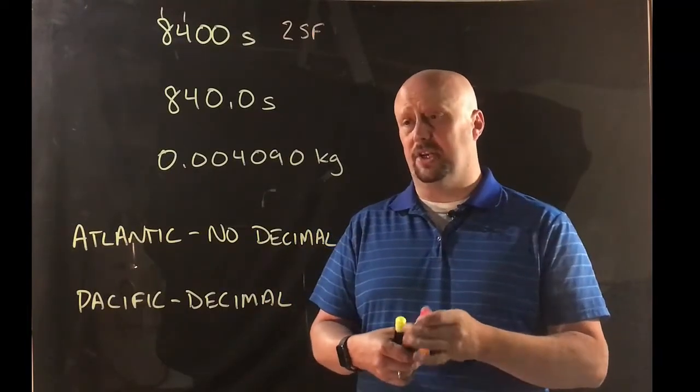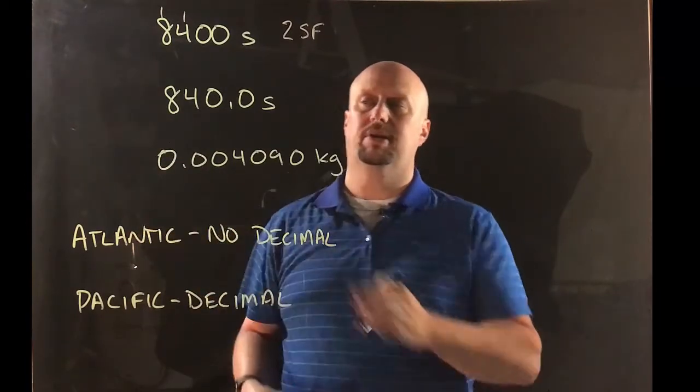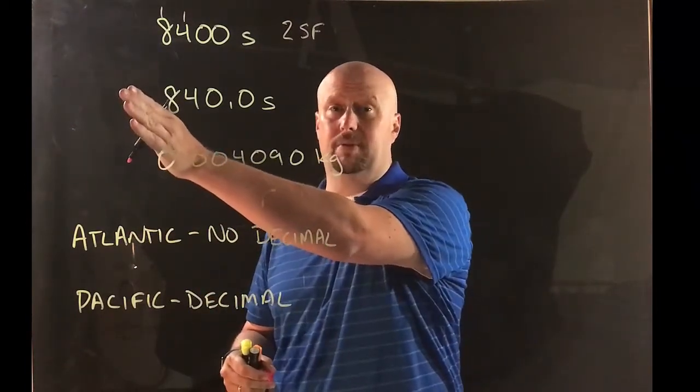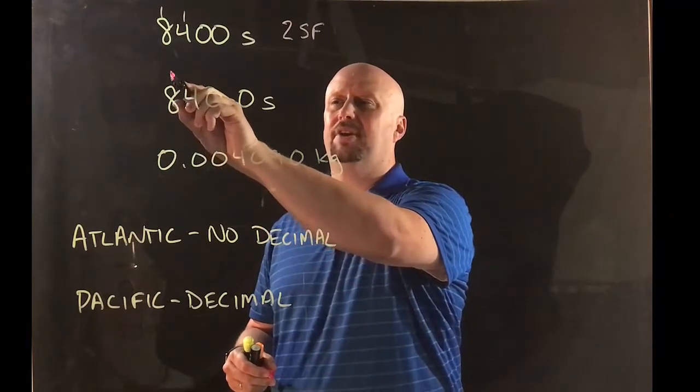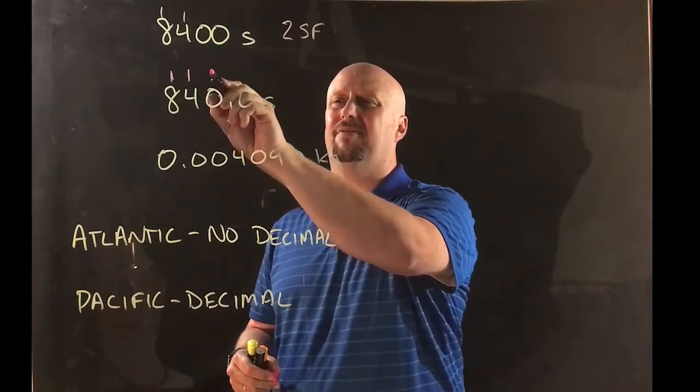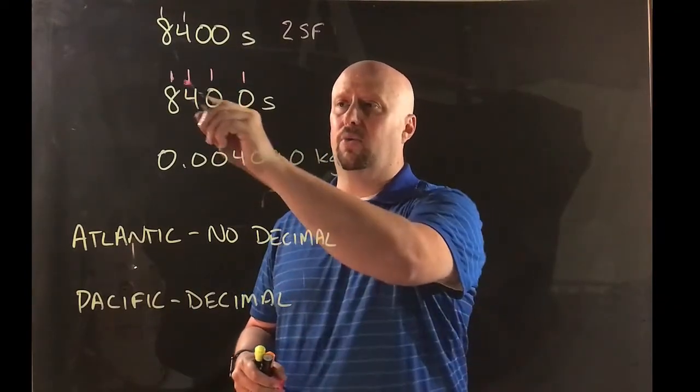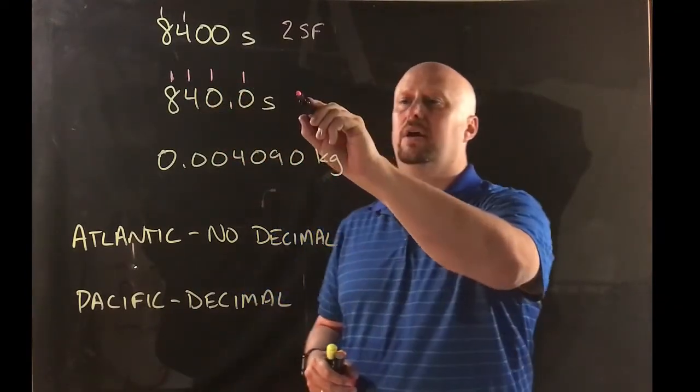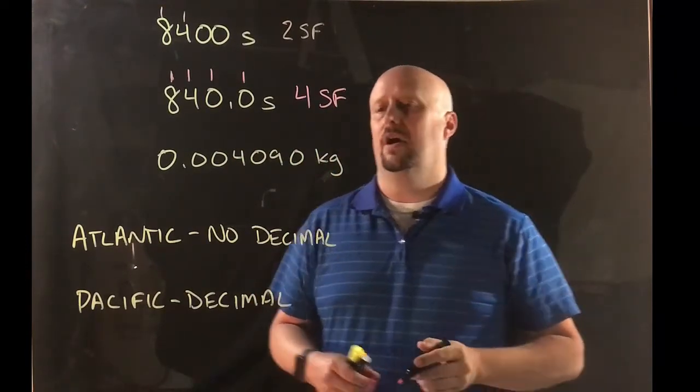For the next one things are gonna change up a little bit because for the next one I do have a decimal. So it's Pacific, which means I'm gonna start from the Pacific side, from the left hand side. First non-zero is here. And then after you hit the first non-zero everything counts, even zeros. So one, two, three, four. And that gives me four significant figures.